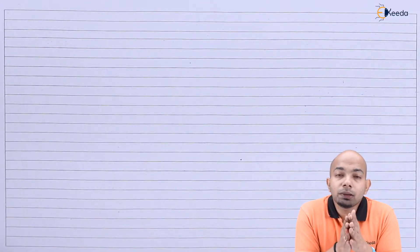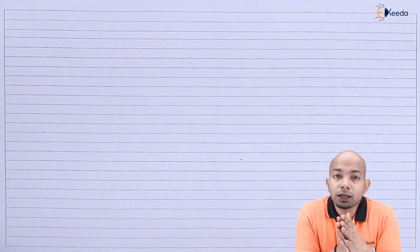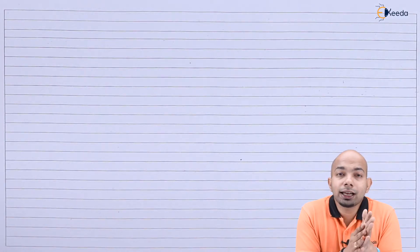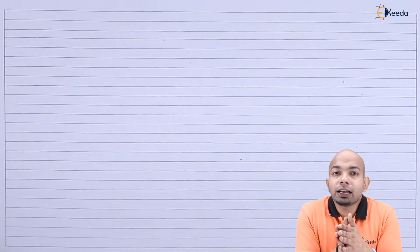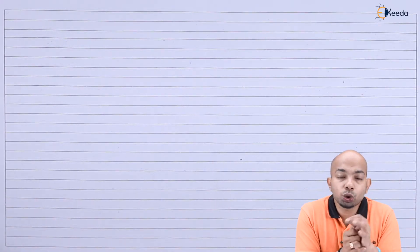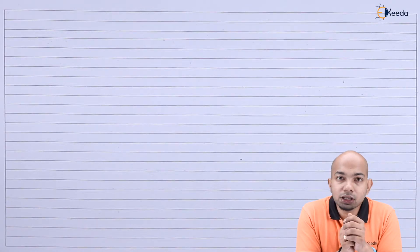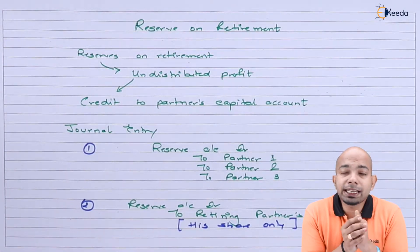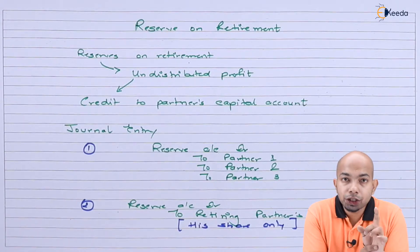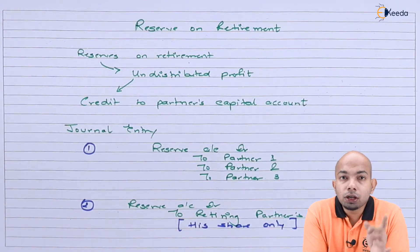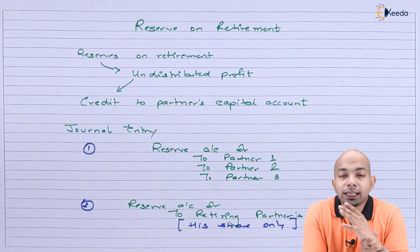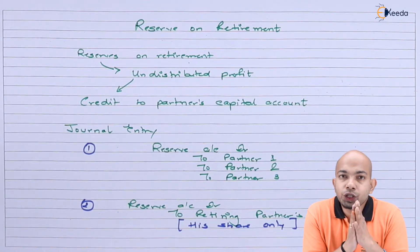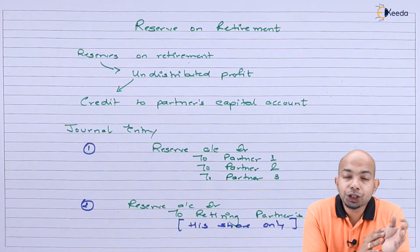If the continuing partners wish to change the profit sharing ratio, then the reserves and surplus will be shared according to the new ratio. There are two journal entries: in the first situation, the reserve account is credited to Partner 1 capital, Partner 2 capital, and Partner 3 capital — shared among all three partners in the existing profit sharing ratio.